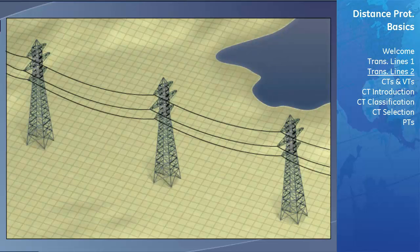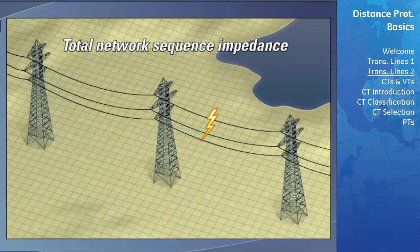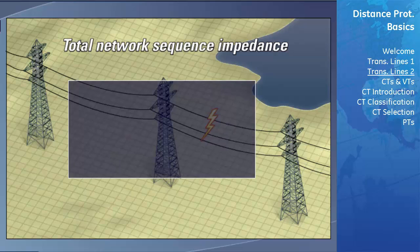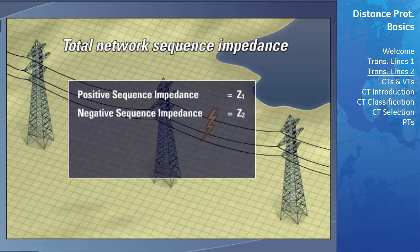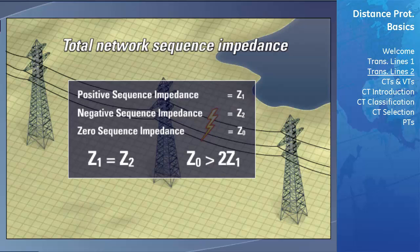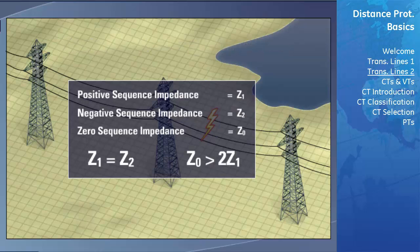In order to calculate sequence currents and voltages correctly during faults, the total network sequence impedance of the transmission line system needs to be calculated using the positive sequence impedance, negative sequence impedance, and zero sequence impedance. For transmission lines, under most circumstances, the positive sequence impedance is equal to the negative sequence impedance, and the zero sequence impedance is usually greater than two times the positive sequence impedance. However, these values can change depending on the grounding path and the geography of the line.